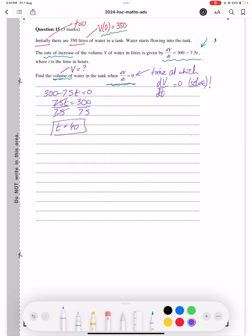Now we need to find the volume. The volume is found by integrating 300 minus 7.5t. That becomes 300t minus 7.5t squared over 2 plus C.